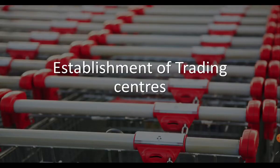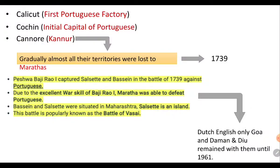Now, regarding the establishment of Portuguese trading centers: the first Portuguese factory was in Calicut, and Cochin was the initial capital of the Portuguese. Cannur, also known as Cannore, was another early center.